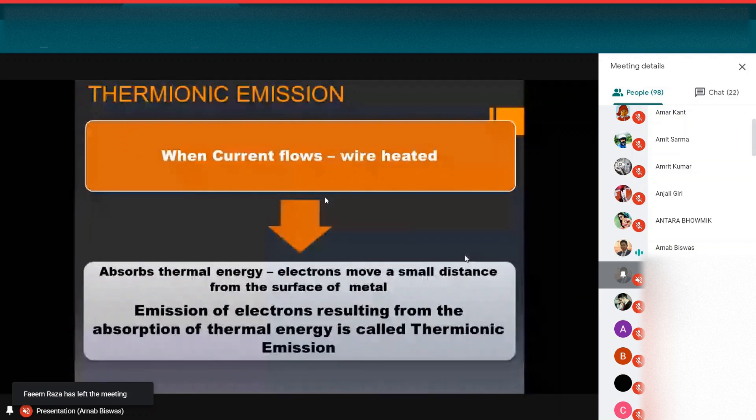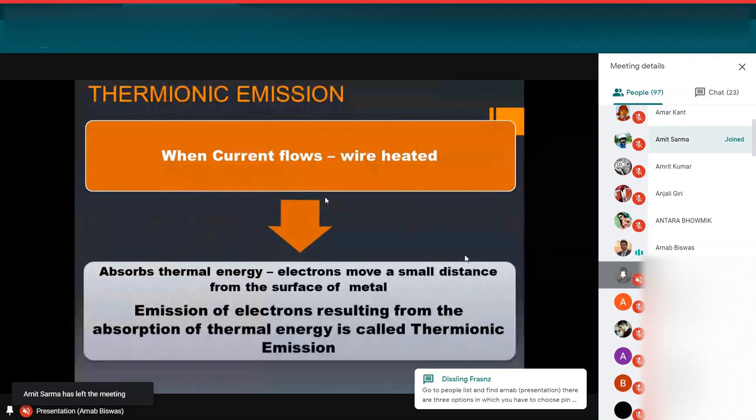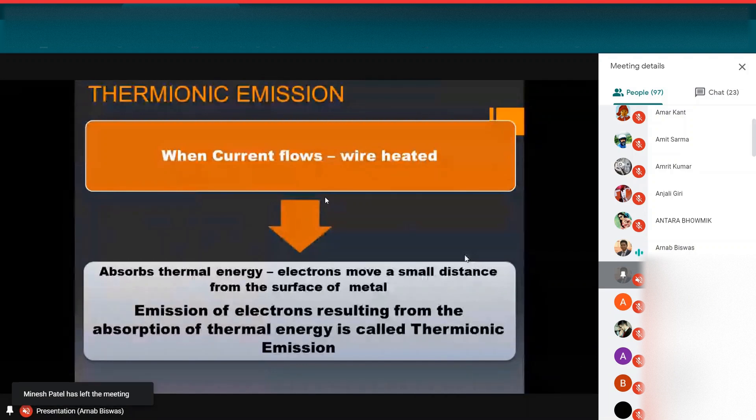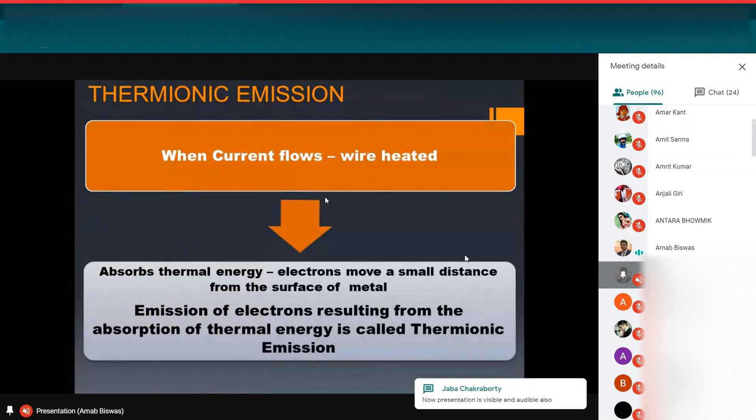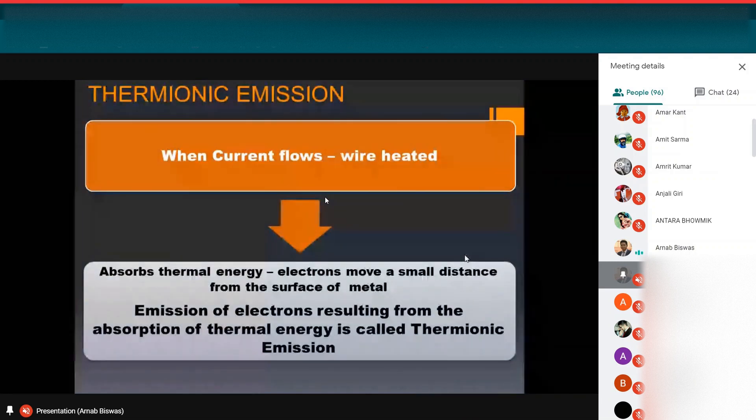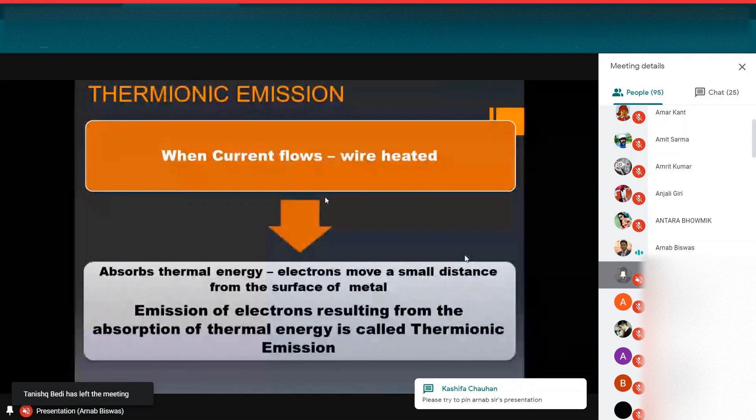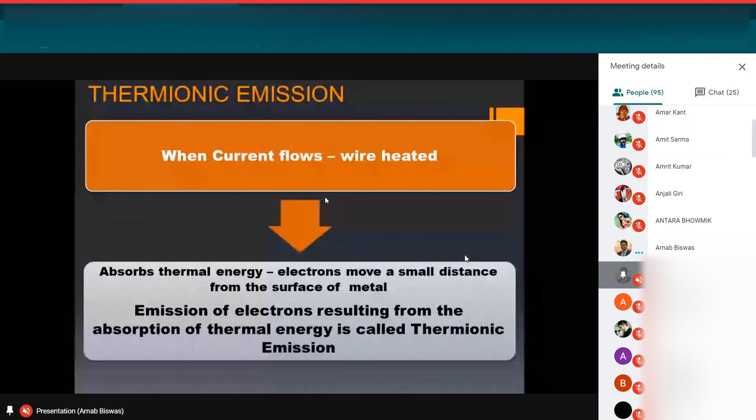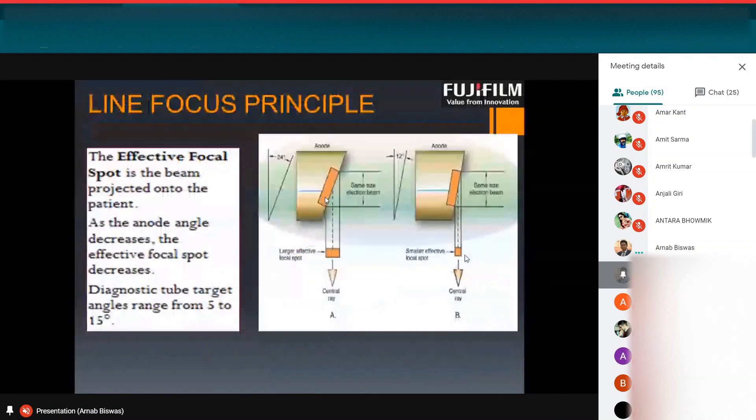I discussed about the thermionic effect. What happened when tungsten filament heated by electric current, it releases negative electrons by thermionic effect. What is thermionic effect? Thermionic effect is when the current flows, wire heated, it absorbs thermal energy. And the electrons move a small distance from a surface of metal. Thermionic emission of electrons resulting from the absorption of thermal energy is called thermionic emission. Due to this thermionic emission, the negatively charged electrons flow from the negative charge end to positive charge end.